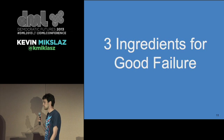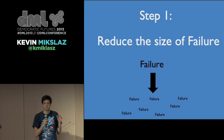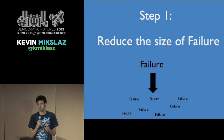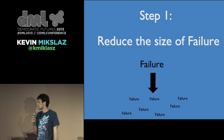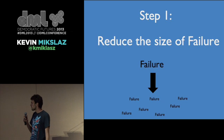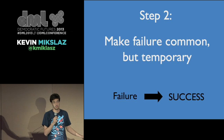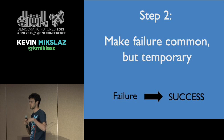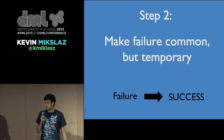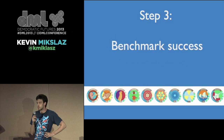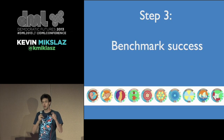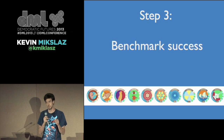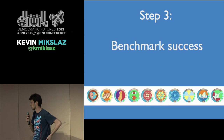First, reduce the size of failure. Instead of giving kids one big way to fail at the end of a semester, give them a myriad of small, inconsequential ways to fail throughout the learning process. Step two: failure should be an extremely common process throughout learning, but a temporary state — always waiting to be transferred into a success. Step three: very clearly benchmark what success is, making it exceptionally obvious to students when their failure is no longer a failure. This is what badges hold real potential for — as a benchmarking tool.